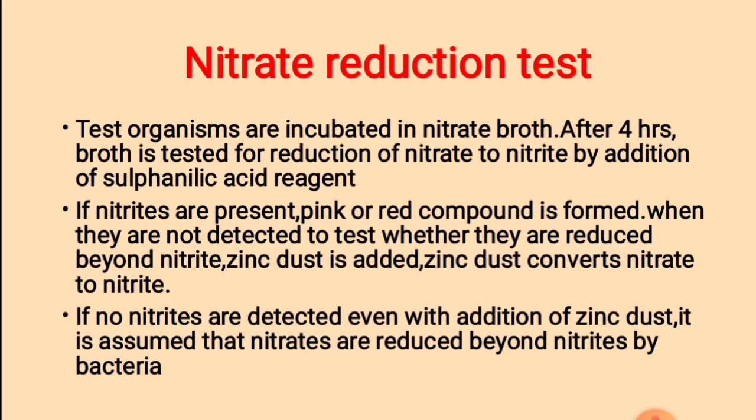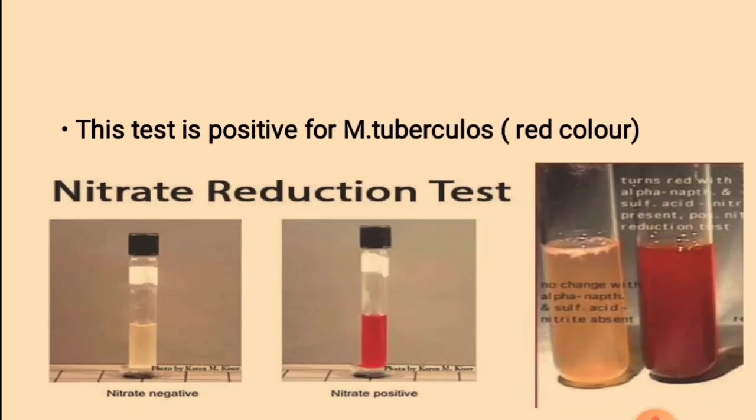Nitrate reduction test: the test organism is incubated in nitrate broth for 4 hours, after which the broth is tested for reduction of nitrate to nitrite by addition of sulfanilic acid reagent. If nitrites are present, a pink or red compound is formed. When nitrites are not detected, zinc dust is added to test whether they are reduced beyond nitrite — if no nitrites are detected even with zinc dust, it is assumed bacteria have reduced nitrates beyond nitrite. This test is positive for Mycobacterium tuberculosis, indicated by red color formation.